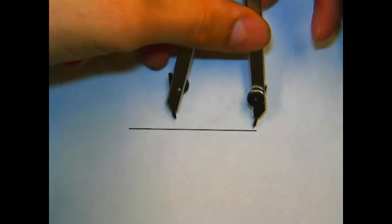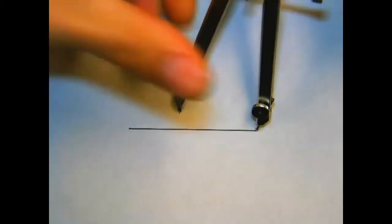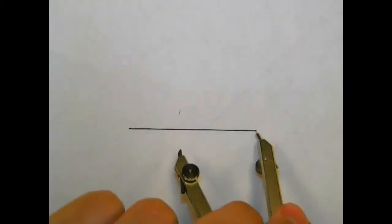Then we will set our compass center point on one of the ends of the line, and we're going to draw an arc.